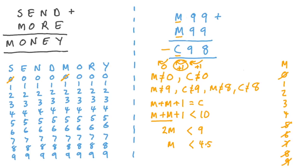But if m was 4, then c here would be 9. But c can't be 9 because we know that we've already got another letter that was 9, o. So m can't be 4 either. There are three possibilities, 1, 2 and 3.